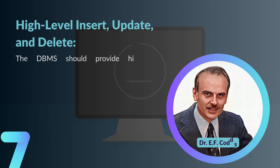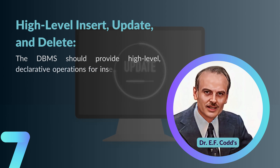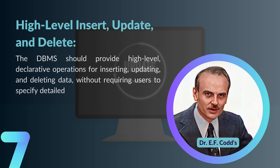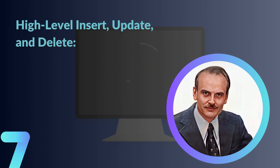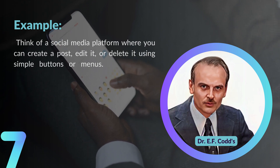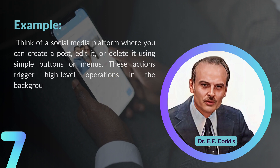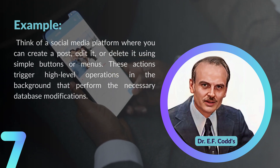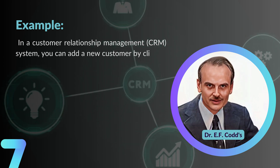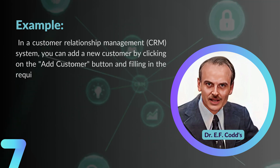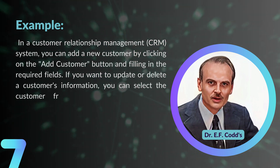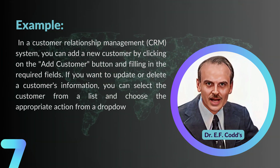Rule number seven: High-level Insert, Update, and Delete. The DBMS should provide high-level declarative operations for inserting, updating, and deleting data without requiring users to specify detailed procedural steps. Think of a social media platform where you can create, edit, or delete a post using simple buttons — these actions trigger high-level operations in the background. In a CRM system, you can add a new customer by clicking 'Add Customer' and filling in fields, or update and delete a customer's info from a drop-down menu.